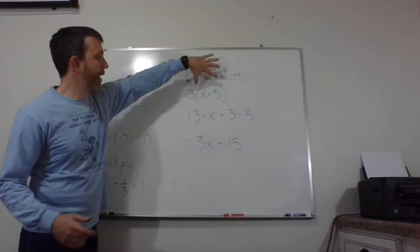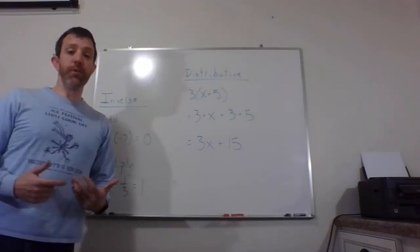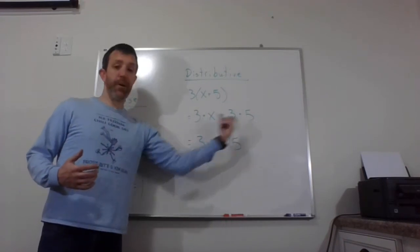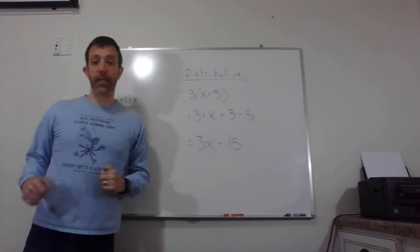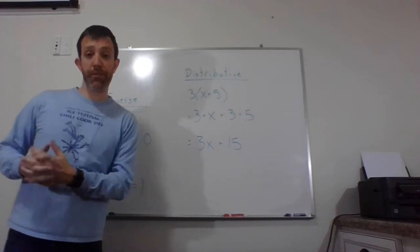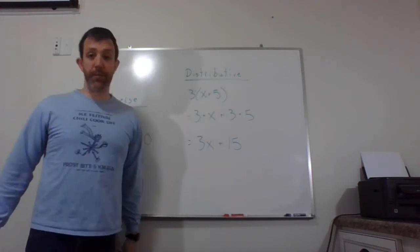So I have three times and then my parentheses x plus five. What I'm going to do is I'm going to take this number that's on the outside being multiplied and multiply it by both parts on the inside. In this case, since I have an addition sign in the middle, the addition sign comes straight down to the middle. By the way, that also works with subtraction in the middle. If this were a minus sign, you could drop your minus sign down to the middle.